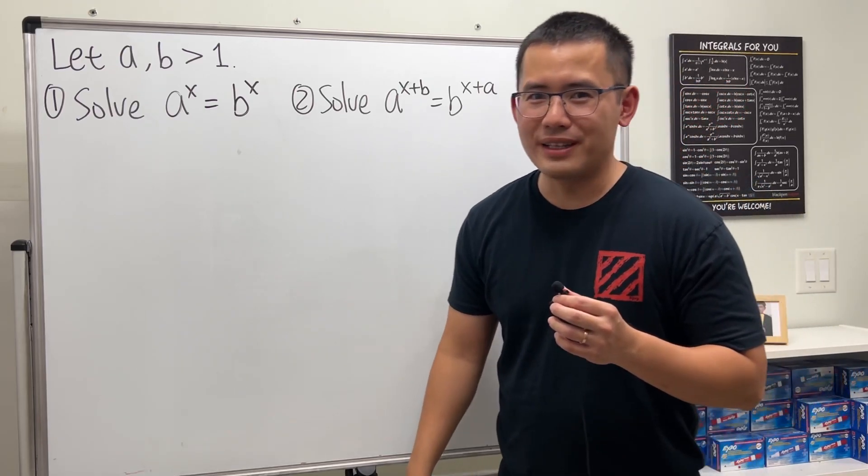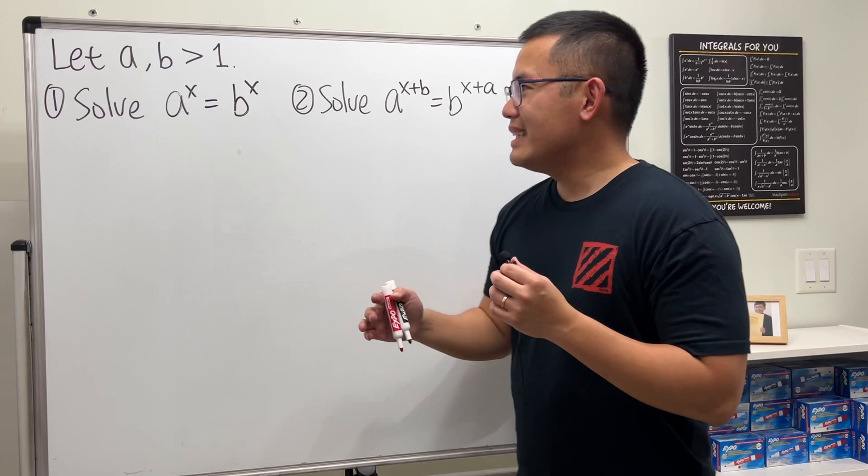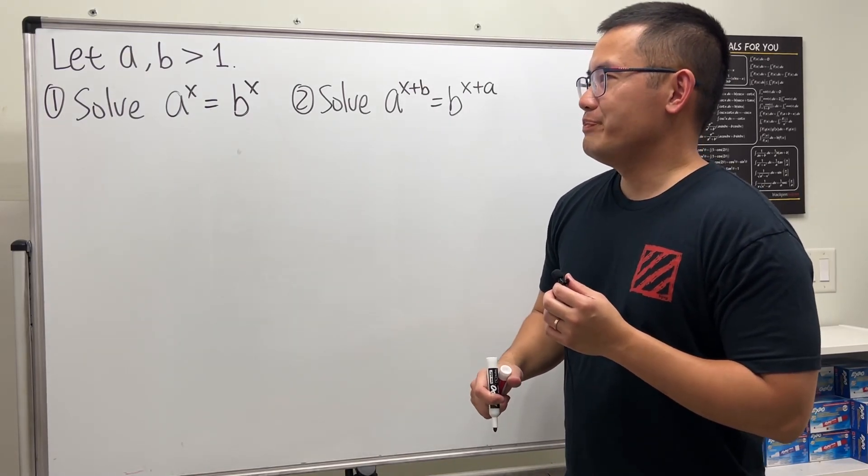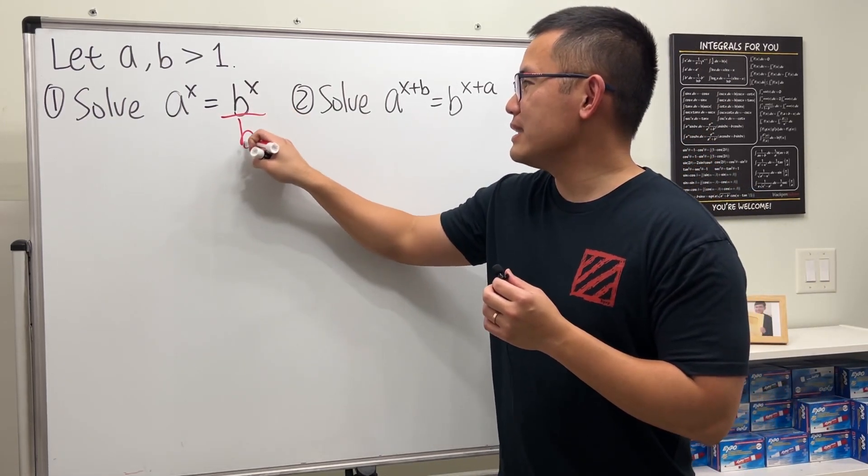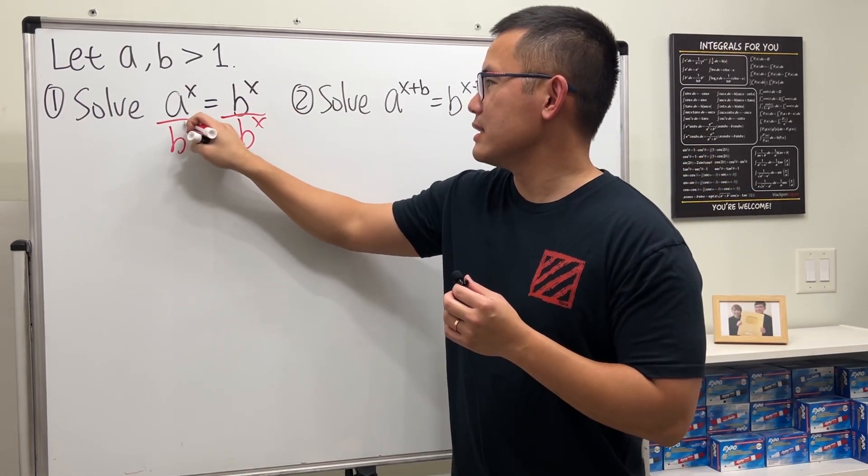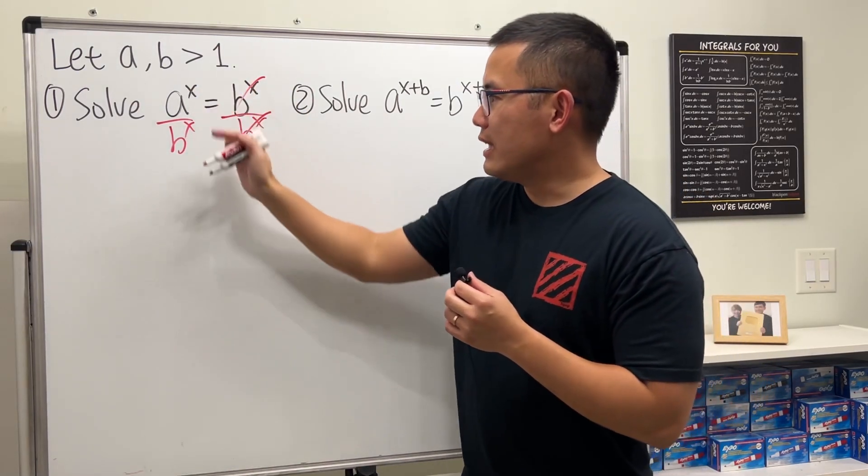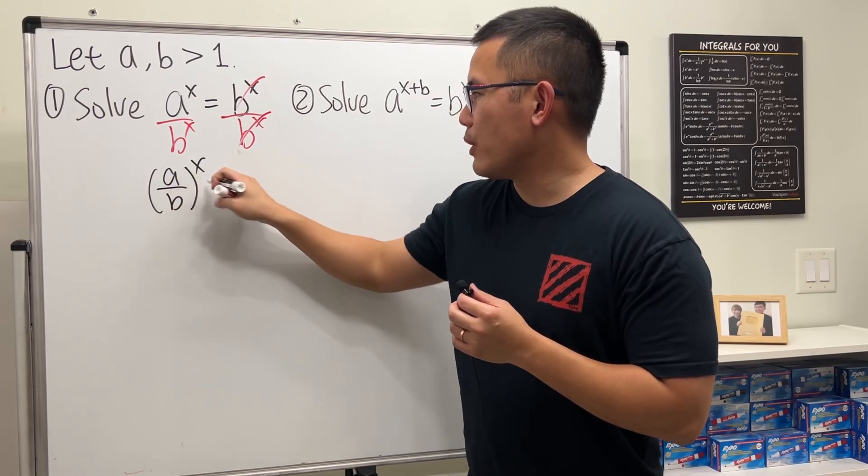I'm pretty sure you guys know the answer right away - x is just equal to zero. If you want to show it, you can do the following. Let's divide b^x on both sides so that this and that cancel and we just get one. For the left hand side we can write that as (a/b)^x and that will give us one.